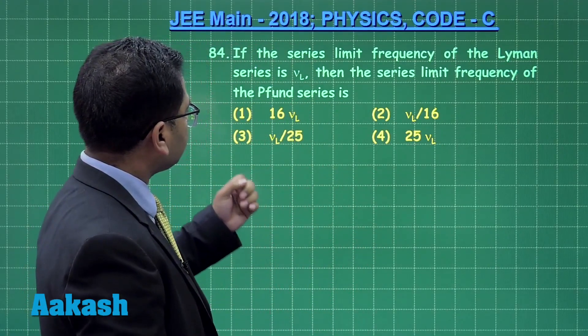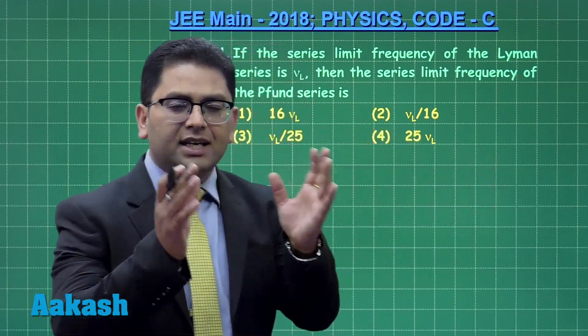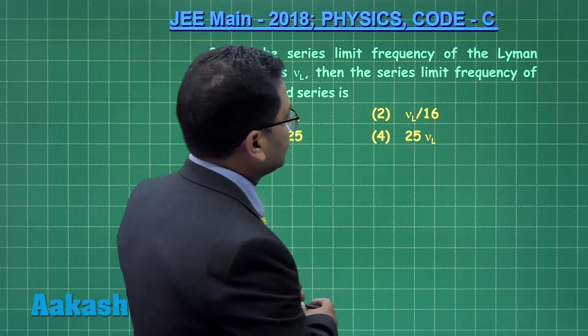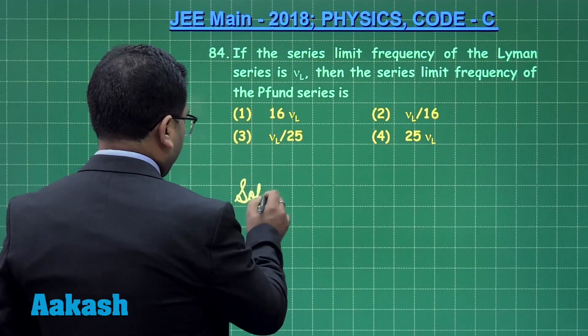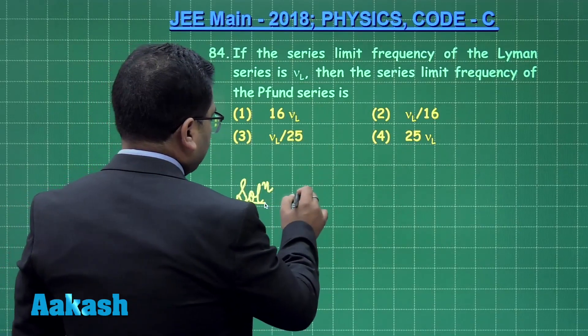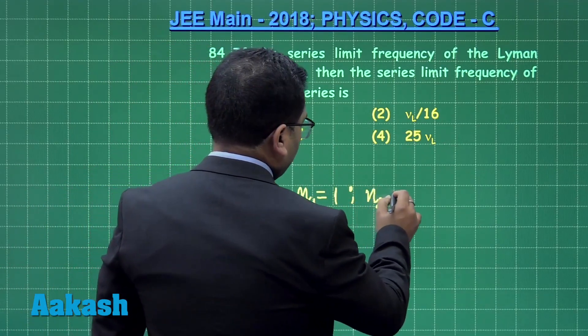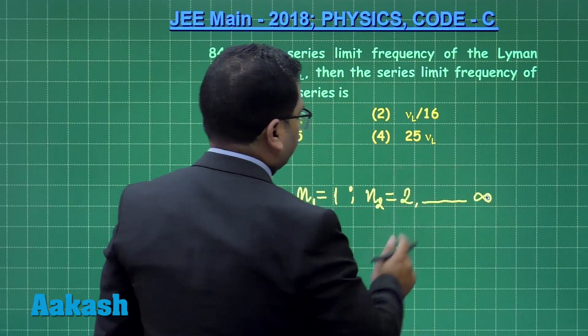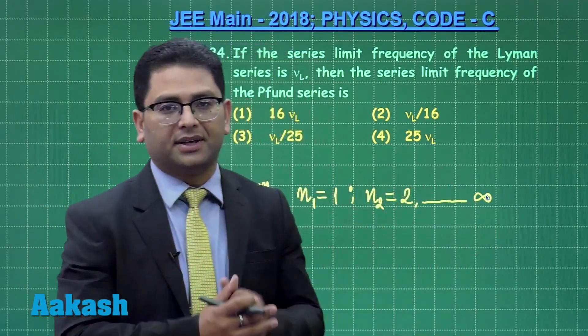Let us try to see, the series for any given thing starts from a certain n and goes on the higher value. If I see the Lyman series, the Lyman starts from n equals to 1 and n2 would be starting from 2 till infinity. And the 1 to 2 transition is the first member while 1 to infinity is the limit.